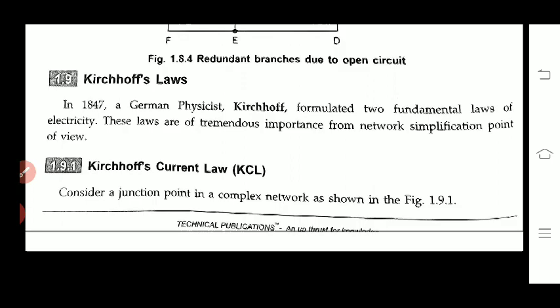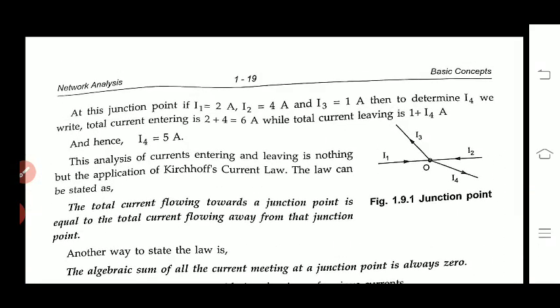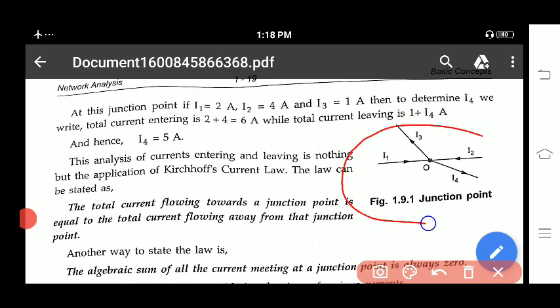The first one is KCL — Kirchhoff's Current Law. Here you can observe the KCL operation in this circuit. The incoming current at a junction is equal to the outgoing current. Incoming currents are I1 and I2, both arriving at junction O. I3 and I4 are outgoing at junction O. So you can say that I1 + I2 = I3 + I4. Incoming current equals outgoing current.